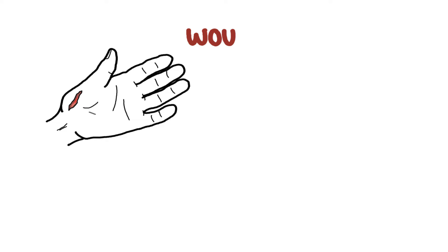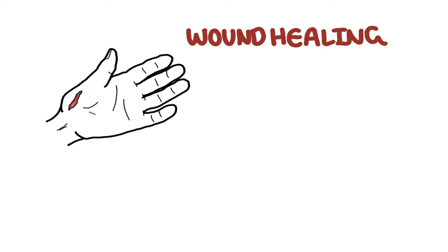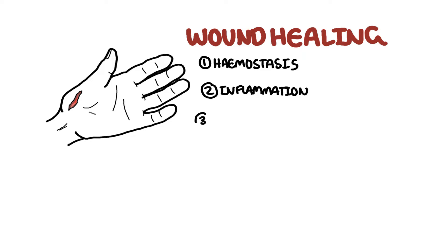All tissues heal by similar mechanisms. Wound healing is a complex process of overlapping phases that is initiated by an injury or wound. Normal wound healing is divided into phases defined by characteristic cellular populations and biochemical activities. These phases include hemostasis, inflammation, proliferation, and remodeling.